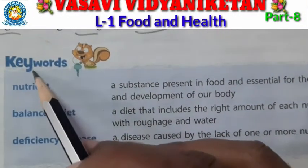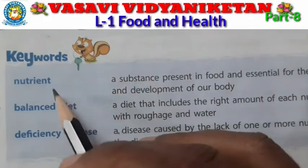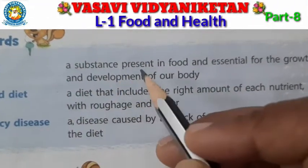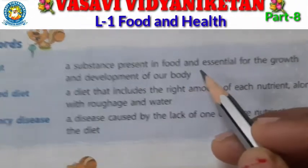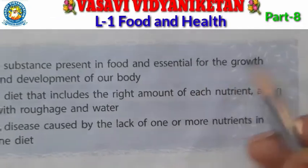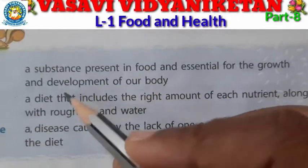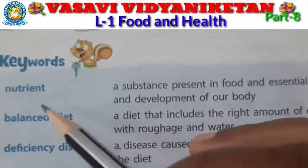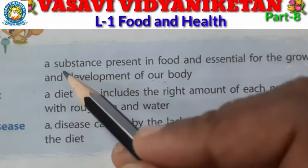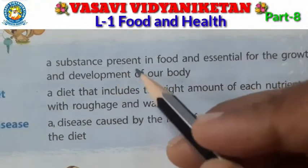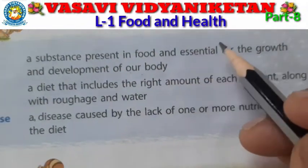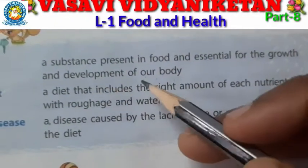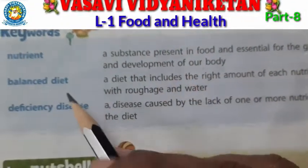See keywords. Nutrient: a nutrient is a substance present in food and essential for the growth and development of our body.